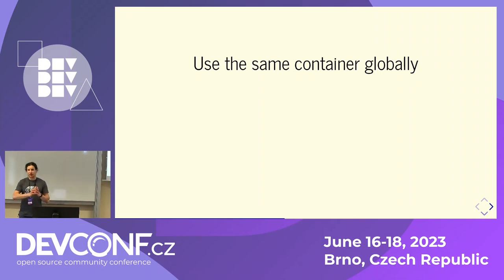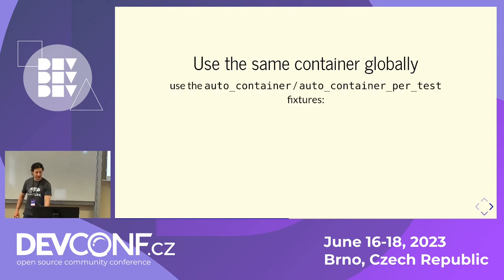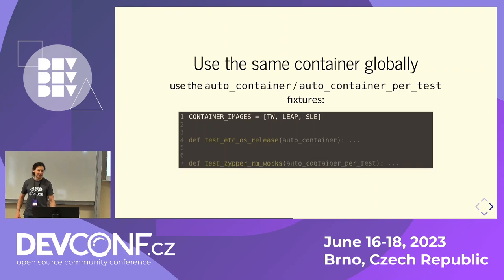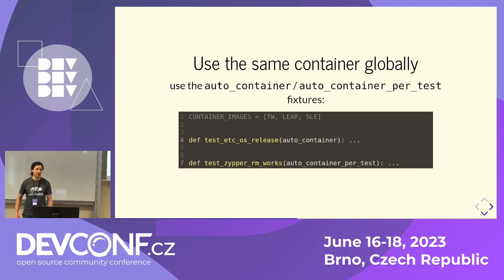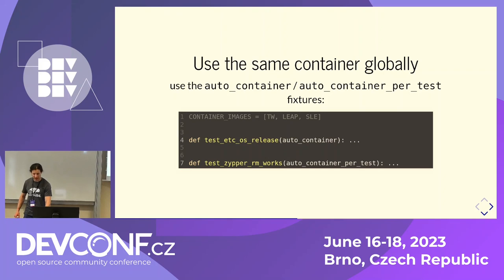If you have a set of tests which should all run on the same container image and you don't want to write the test mark parametrize for everyone, you can just define a global variable called container_images and use a fixture called auto_container. Then everything will just be automatically parameterized by some very nasty PyTest magic that I'm not proud of.